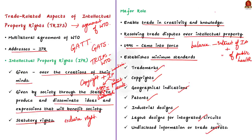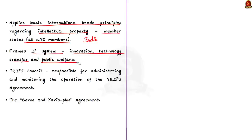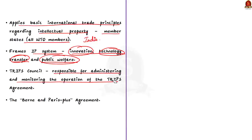In simple terms, TRIPS applies basic international trade principles regarding intellectual property to member states and is applicable to all WTO members. Note that India is also a WTO member. It frames the IP system in terms of innovation, technology transfer and public welfare. The TRIPS Council is responsible for administering and monitoring the operation of the TRIPS agreement. The TRIPS agreement is also described as the Berne and Paris plus agreement.